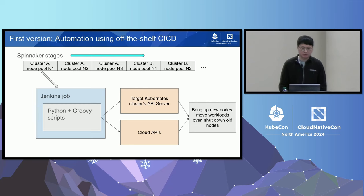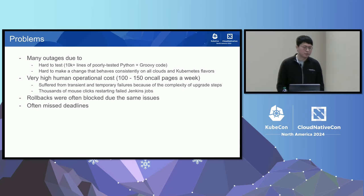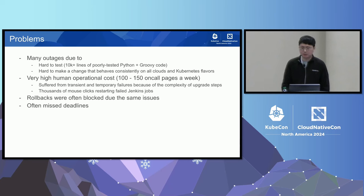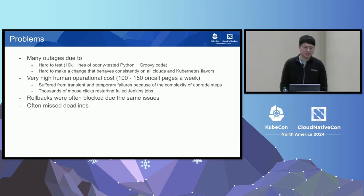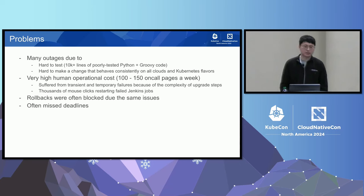We launched this first version, but it didn't work well for many reasons. It caused many outages. First, it was very hard to test — the upgrade logic was very complex, with a lot of custom logic for different clouds and specific workloads. We ended up having over 10,000 lines of poorly tested Python and Groovy code. It's inherently hard to do unit testing and integration testing on these kinds of CI/CD or workflow engines. Sometimes we'd deploy changes to a dev Spinnaker instance, but test coverage was very poor in general.